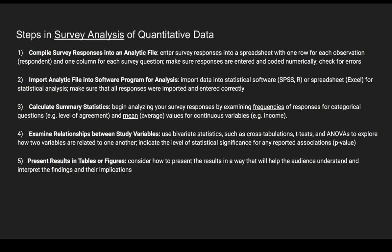Cross-tabulations are where you're looking at bivariate relationships between two categorical variables. T-tests are used when you're comparing group means within two categories. ANOVAs are used for comparing group means in three or more categories. The last step is to present results in tables or figures.